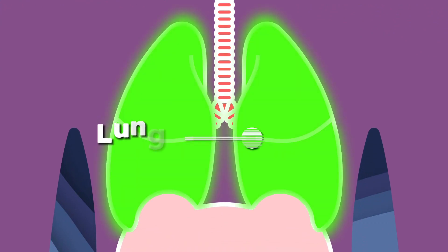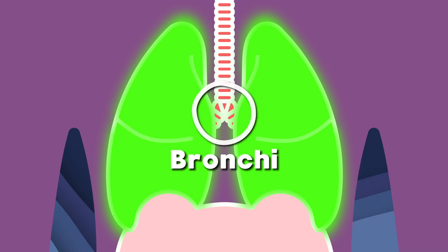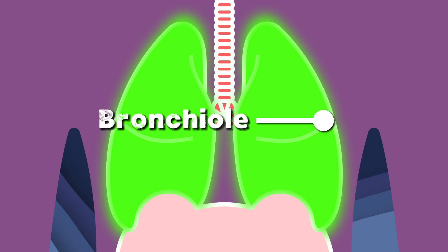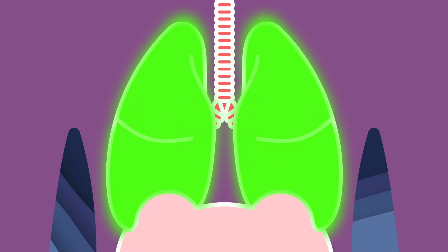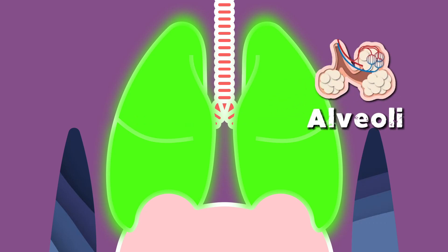The lungs are here to help you breathe. Our bronchi stem from the trachea. Our bronchioles are airways that extend from the bronchus into the alveoli, where the gas exchange occurs in the process.